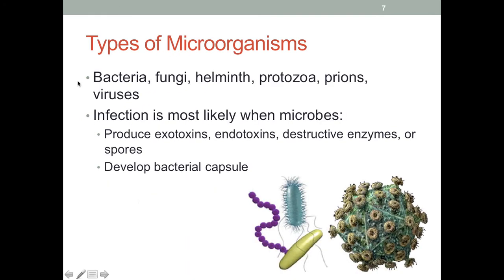There are many types of organisms that cause infection: bacteria, viruses, fungi, and also some lesser commonly known ones. All of these are invaders into our human body. When we have an infection going on in the body, it means not only do we have these invaders that have entered, but we also have them growing, proliferating, and producing toxic materials such as exotoxins and endotoxins, and also certain enzymes that are destructive to human tissue, as well as spores and bacterial capsules. All of these are what the microorganisms need for their survival and life cycle, which is all done at the price of our health.